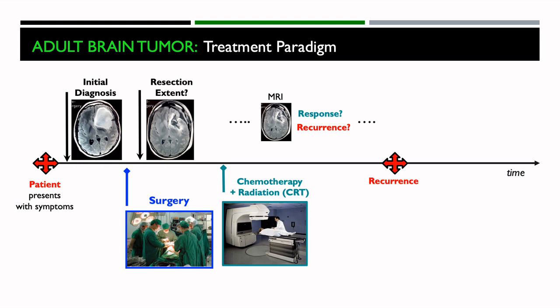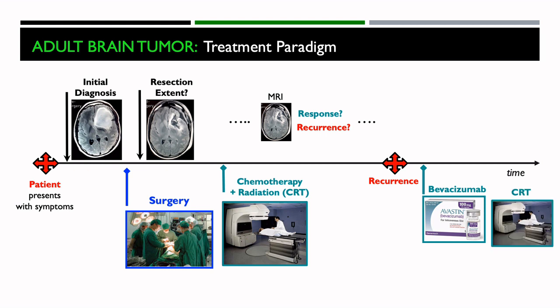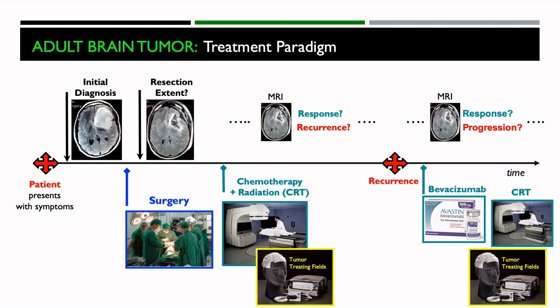If there is recurrence, there are other treatment options, including bevacizumab or Avastin, chemoradiation therapy. And then again, this is followed by MRI exams to assess whether or not the patient is responding or is there tumor progression. Recently, tumor treating fields have been added to these treatment options, both for newly diagnosed tumors and for recurrent tumors.